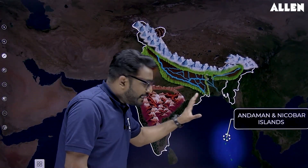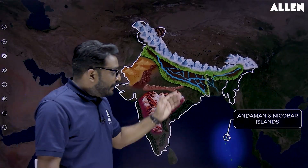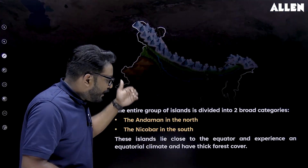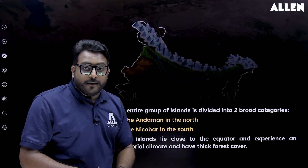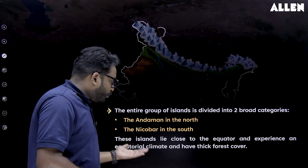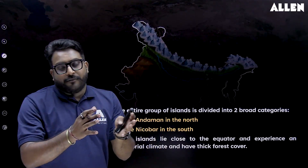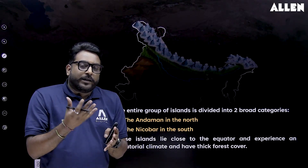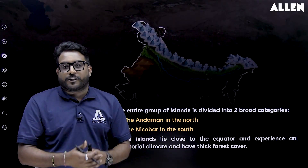The next island group lies in the Bay of Bengal — the Andaman and Nicobar Islands. The northern part is Andaman and the southern part is Nicobar. This island group is located close to the equator, experiences an equatorial climate, and has a thick forest cover. I hope whatever we have gone through in this part, you must have understood it.